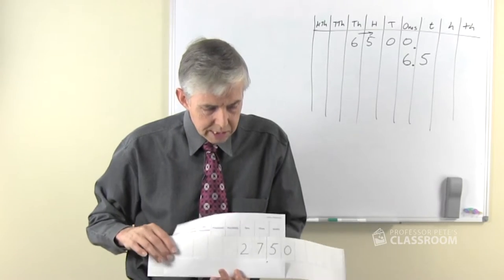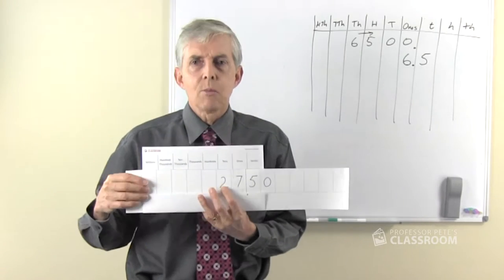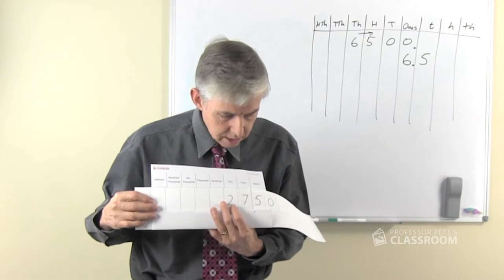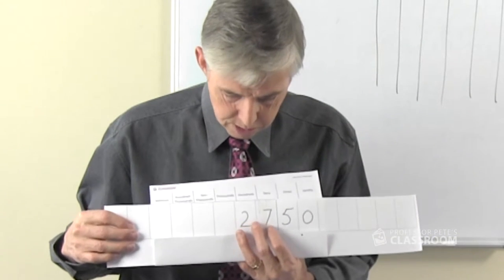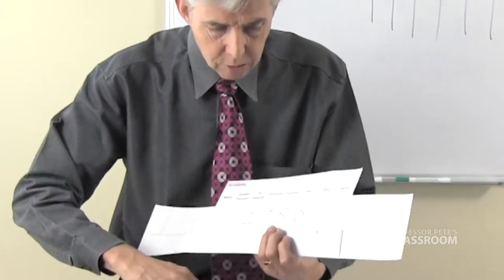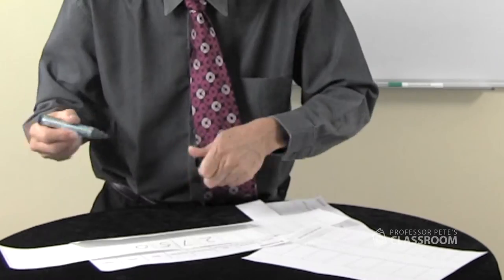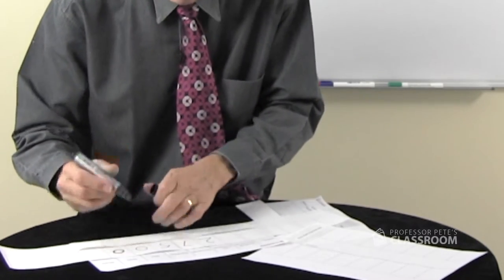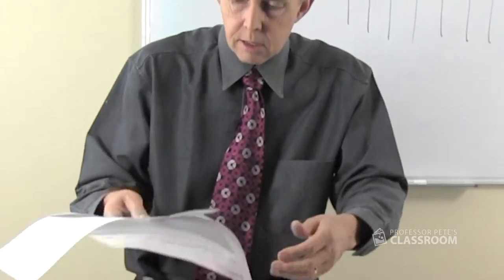Let's say we started with 27.5, there it is, and we're multiplying by let's say a thousand, so we'll just move this three places, one, two, three. Obviously we have to write another zero in here to hold the ones place and we can see the result 27,500.